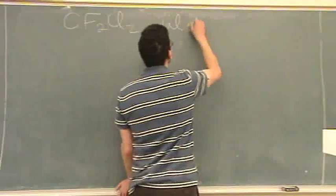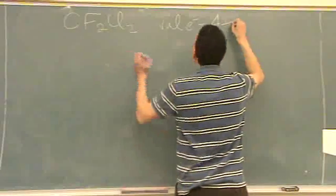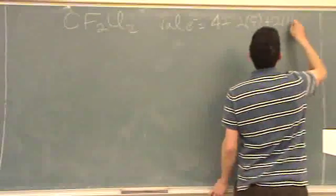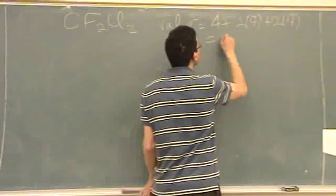So Lewis first. Valence electrons equals carbon is 4, there's two fluorines at 7, and then there's two chlorines, also at 7. So that's 32.